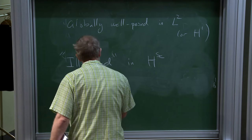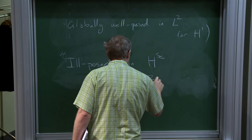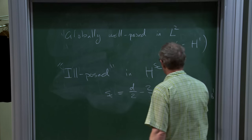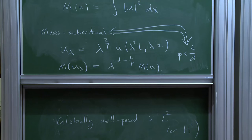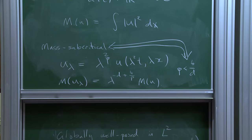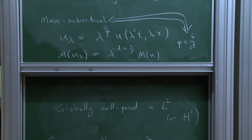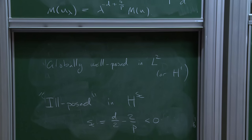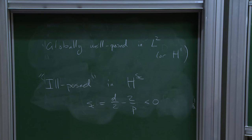H^{SC} is the scaling-critical regularity, which is d/2 minus 2/p—mass subcriticality is the statement that this is negative. Rather than explain what ill-posedness means, let me prove it, following an unpublished paper of Colliander–Christ and Tao. Let me give you a quick sketch of what goes on.